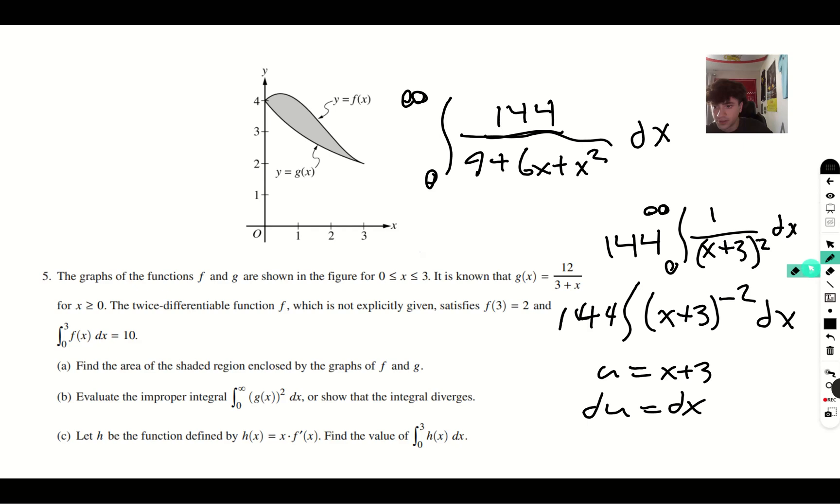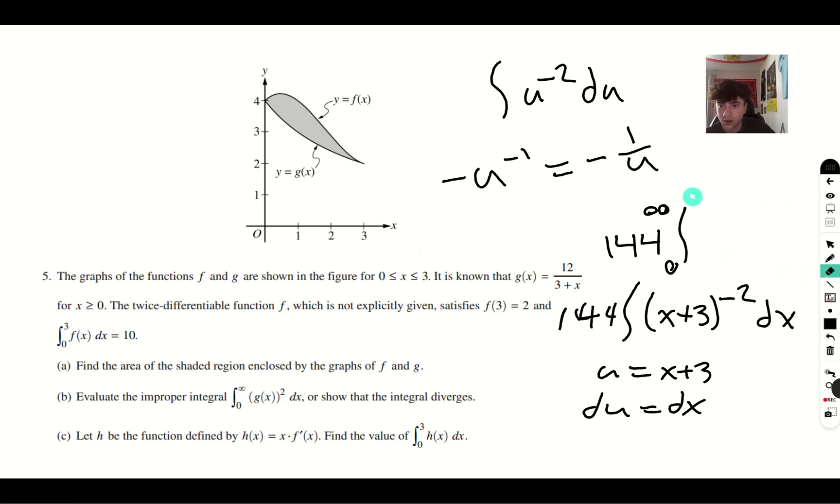And then from here we use u sub. u equals x plus 3, du equals dx. Using that, we can say that we have the integral of u to the negative 2 du. And we add 1, divide, we get negative u to negative 1, or negative 1 over u. And once we put it in terms of x again, that gives us negative 1 over x plus 3.